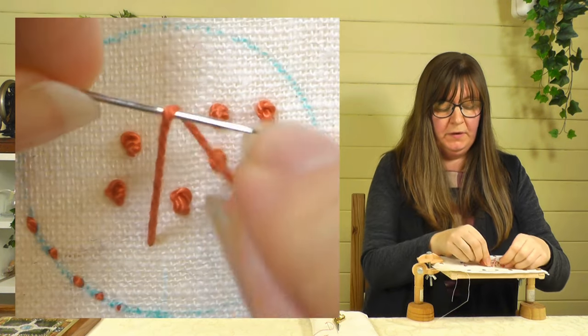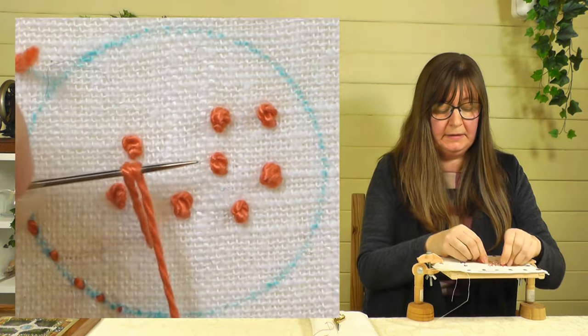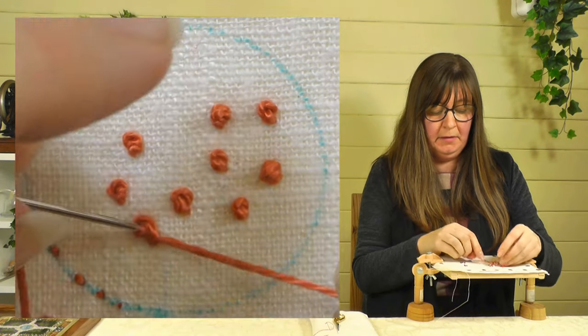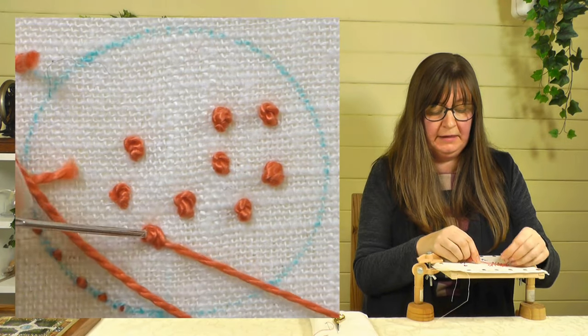One more go, around twice this time: once, twice, keep that tension on, that's really important. Needle goes in close by, pull that tight before you take the needle through to the back. Nice, even French knots.